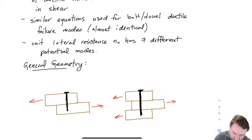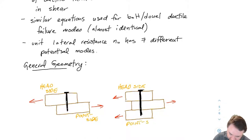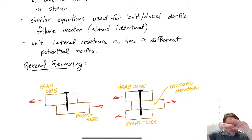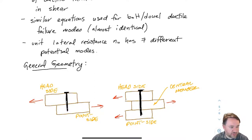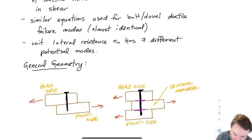For the two-member connection we have a head side member, which is the side that the nail head is on, and then we have a point side member. For the three-member connection it's the same, but both of those members are on the sides — the two side members are the head side member and the point side member. The one in the middle is called the central member. The nail is sheared across one shear plane for the two-member connection and two shear planes for the three-member connection.